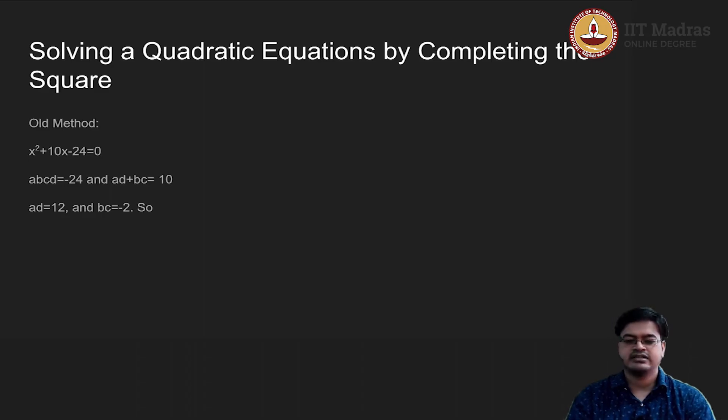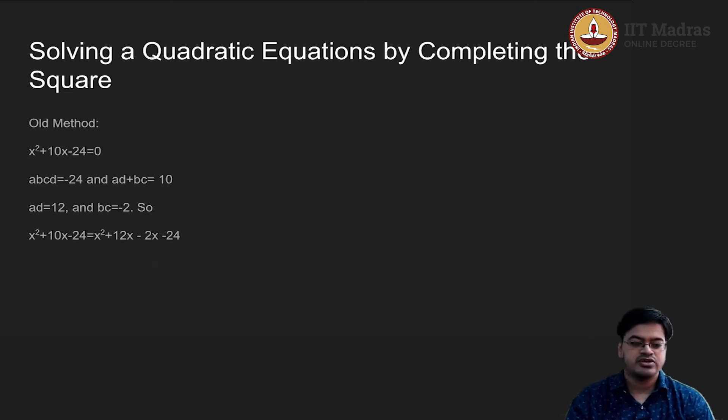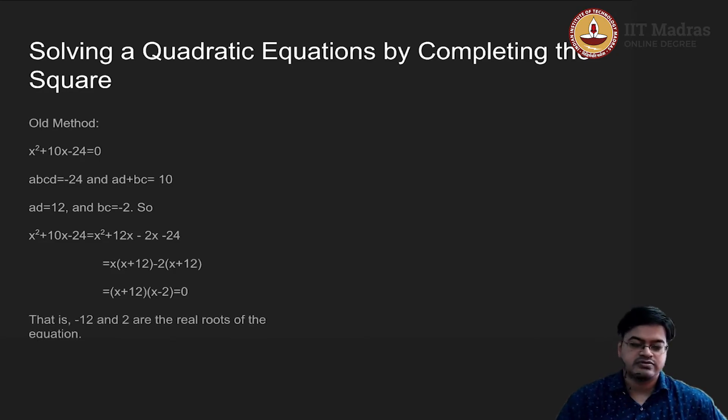Based on our factorization technique, I will substitute this 12 and 2 for this coefficient of x and I will get this expression which is x² + 12x - 2x - 24. Then I will use the greatest common factor technique. I will take out x common from the first two terms and 2 common from the last two terms. Finally, I got x + 12 into x - 2 is equal to 0. Therefore, the roots of the equation are -12 and 2.